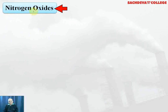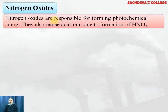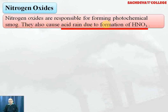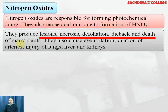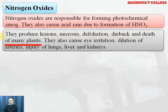Nitrogen oxides are responsible for forming photochemical smog. Photochemical smog suppresses the primary productivity of plants. Nitrogen oxides also cause acid rain due to the formation of nitric acid. They produce lesion, necrosis, defoliation, die back and death of many plants.